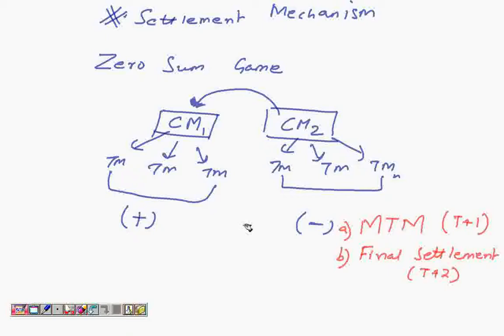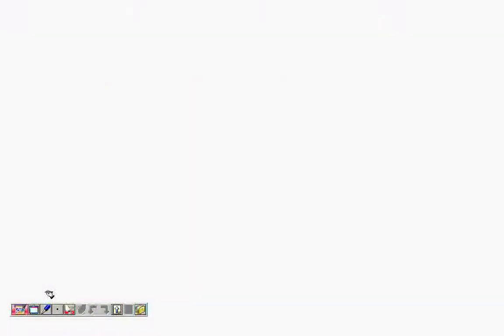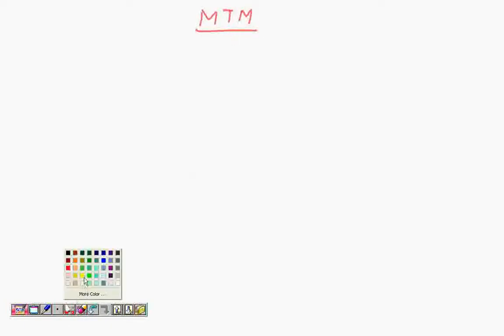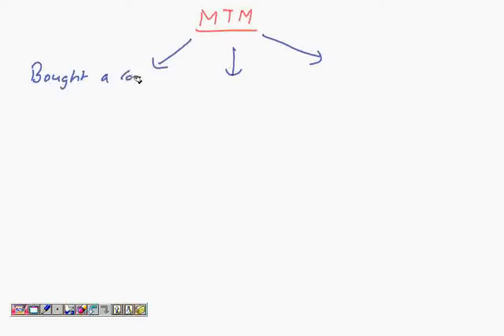When a contract is being traded, there are typically three choices that can happen. One is that you bought a contract and squared up or sold it the very same day. The second option is you bought a contract earlier — it was a forward contract — and it is closed or squared up on that day. And option three means you bought a contract but did not square up; it is carried forward, or what we also call the open interest.